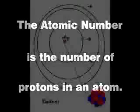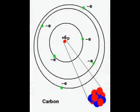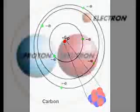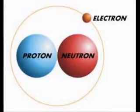For instance, carbon has an atomic number of six, and therefore has six protons and normally has six electrons. In addition to the atomic number, there is also the atomic mass, sometimes called the atomic weight. The mass of an atom is determined by the number of neutrons and protons present in the nucleus.